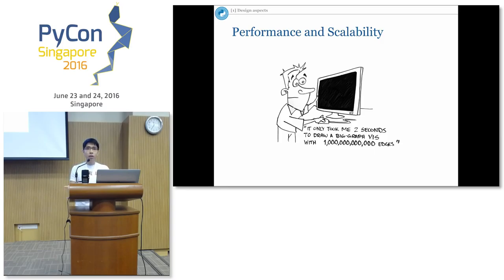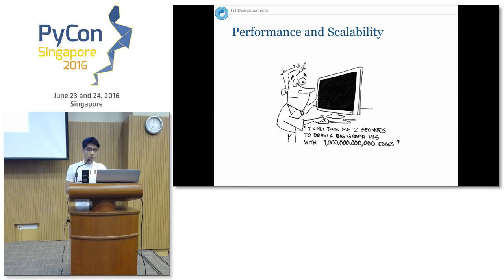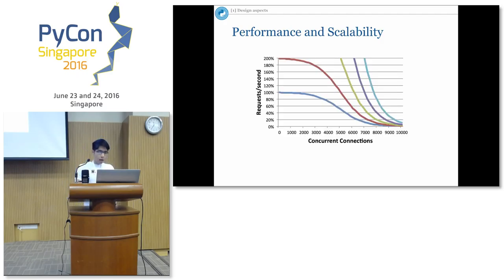Another thing to discuss is performance and scalability. When people talk about scale, they often talk about performance — they are similar but not the same. Performance refers to the ability of a server to serve a certain amount of requests or users. Meanwhile, scalability refers to the characteristic of a system to increase performance by adding more resources. Very often people think that to serve more people, we should just add more servers.